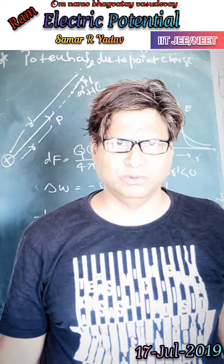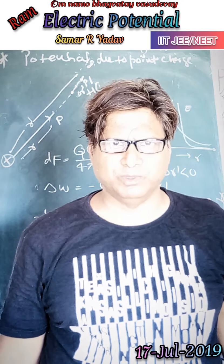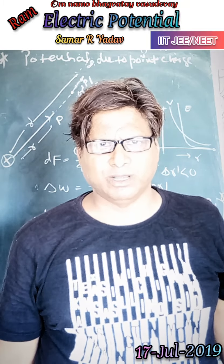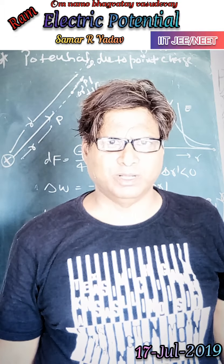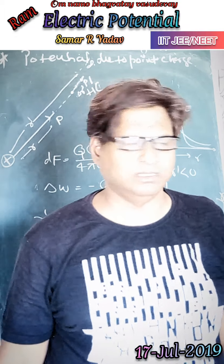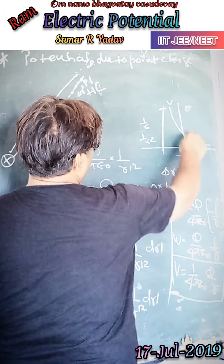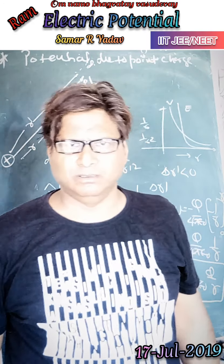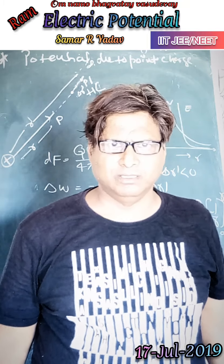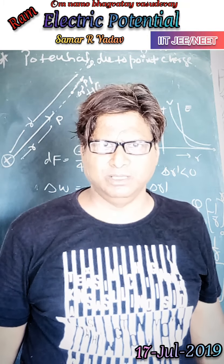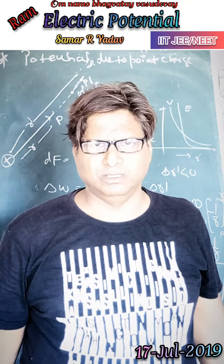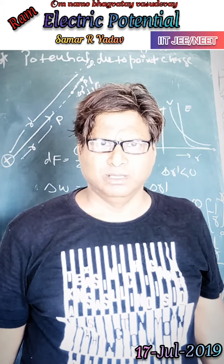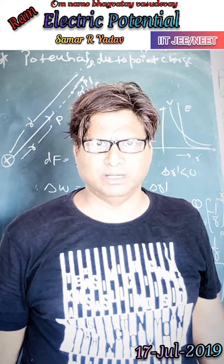We know that V is directly proportional to 1/R, while the electric field E is proportional to 1/R². If you plot both V versus R and E versus R on a graph, you can see that at far distances the electric field decreases by 1/R² while the potential decreases by 1/R. This concludes the discussion of potential due to a point charge.